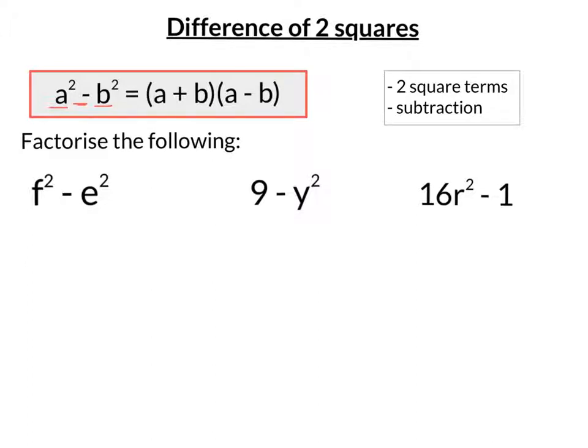If you have that, a squared minus b squared, then to factorise it, you have one bracket with a plus b, and the other bracket with a minus b.